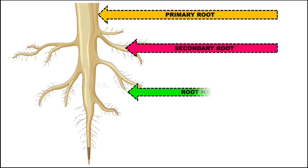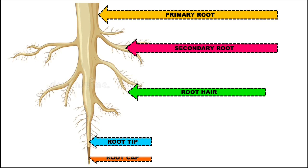The root hair tip is very delicate — this is the region of growth. The tip is covered by a cap-like structure which is called the root cap. The root cap protects the root tip from injury.